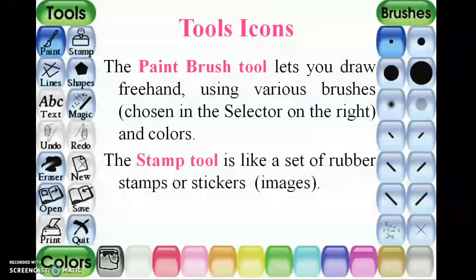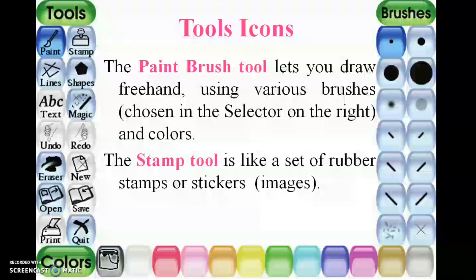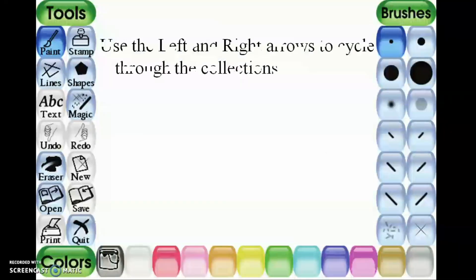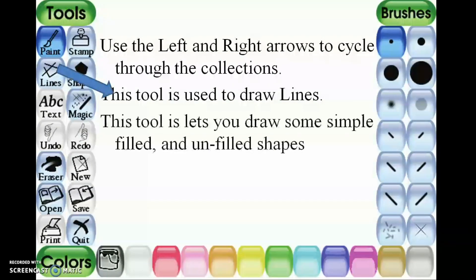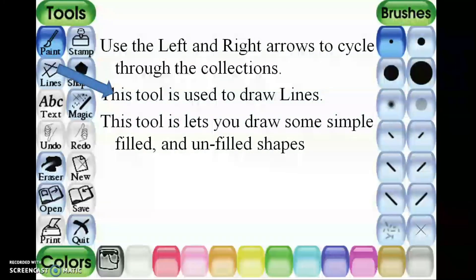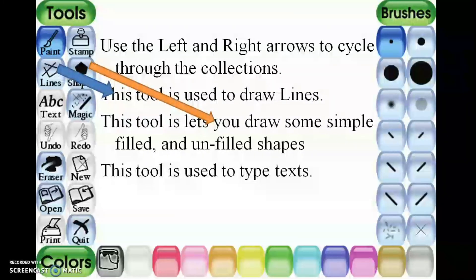The first tool icon is the paintbrush tool, which is used to color. The stamp tool is available on the right-hand side; use the left side arrow to cycle through the collection. The line tool is used to draw lines. The shapes tool is used to draw simple filled and unfilled shapes.